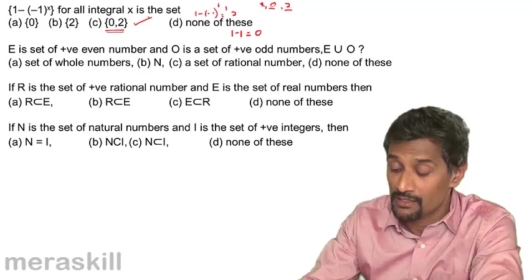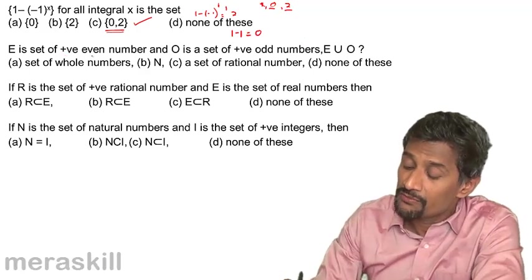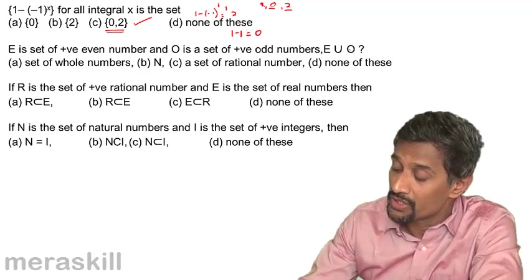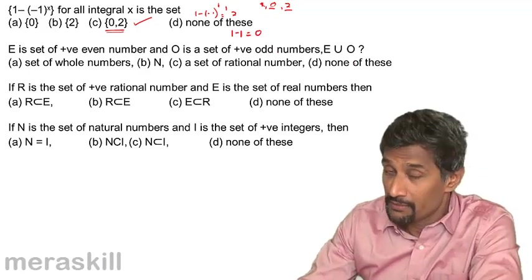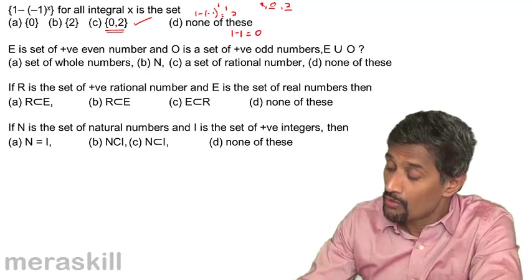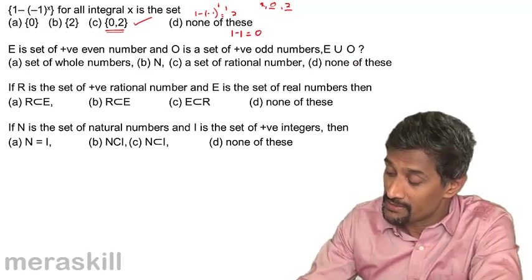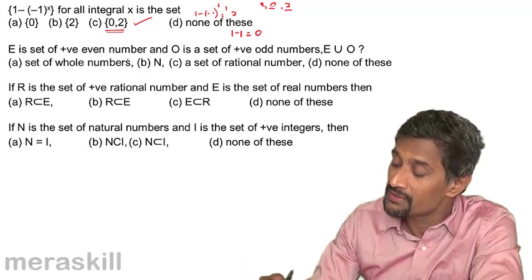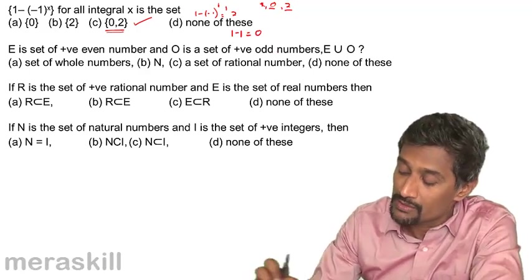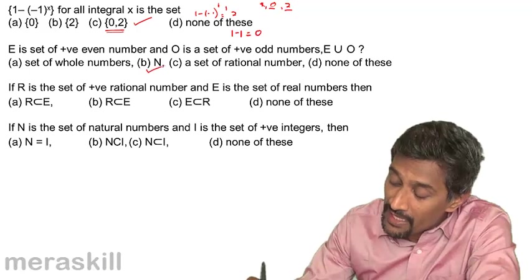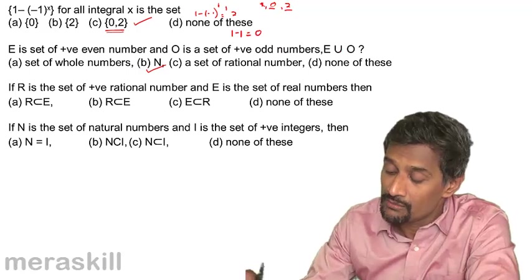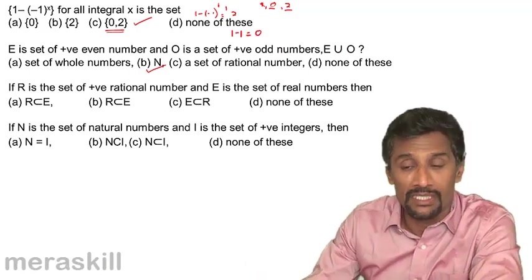Next problem: E is the set of positive even numbers and O is the set of positive odd numbers. E union O would be what among these? The positive even numbers and all the positive odd numbers form which set?